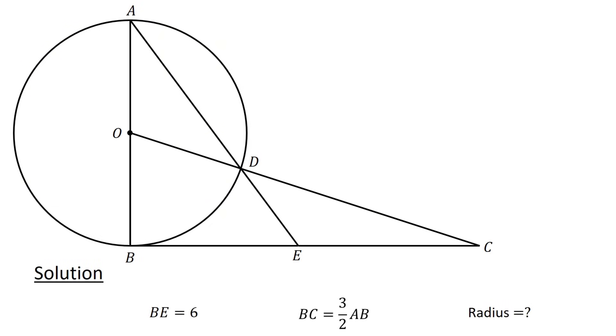And now for the solution. First, let's denote the radius as R. Since AB is the diameter of the circle, we have AB equals 2R. Because BC equals 3 over 2 AB, we have BC equals 3 over 2 times 2R or 3R.